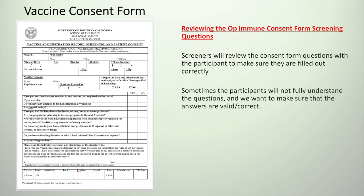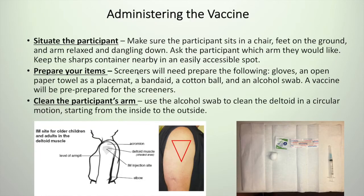Once everything is set up and ready to go, we can start the setup process. First, you want to situate your participant in a chair, feet on the ground, and arm relaxed and dangling down. Ask which arm they would prefer. Next, make sure the sharps container is nearby in an easily accessible spot.